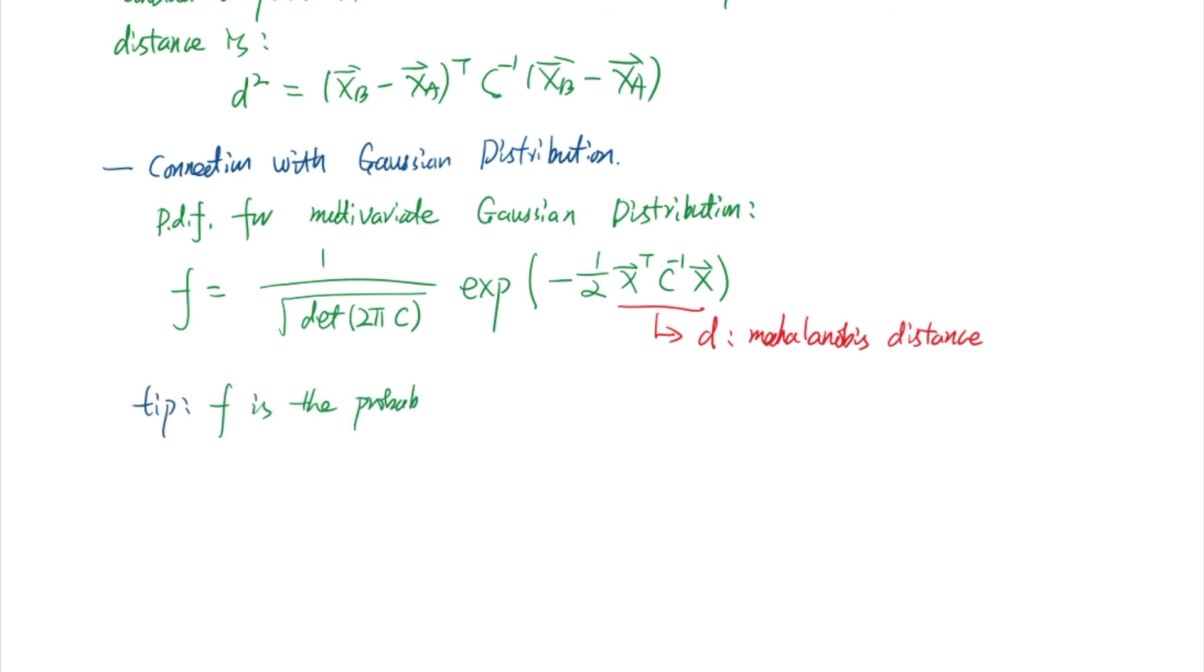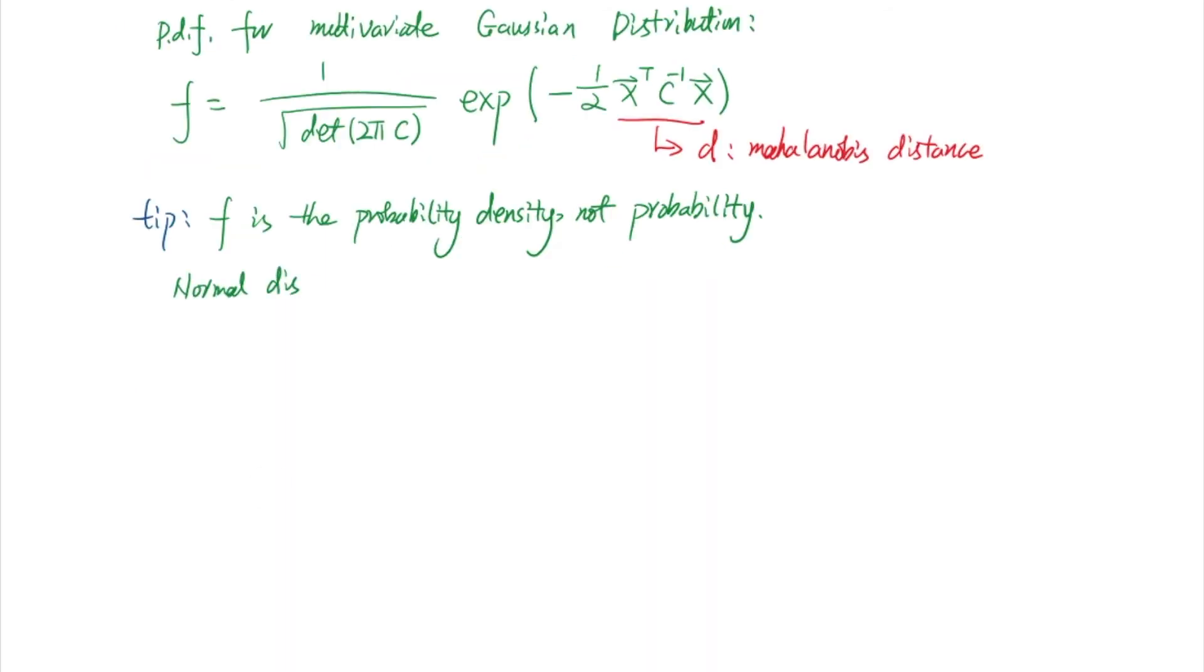Here, I want to give you a tip that f is the probability density, not the probability. For example, for a normal distribution, we can draw its probability density in this curve. And of course, it has a certain mean, we call it X bar.